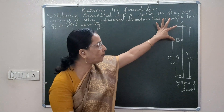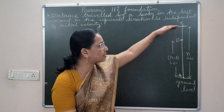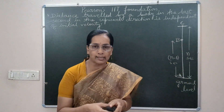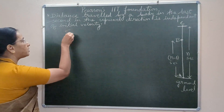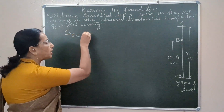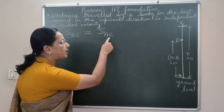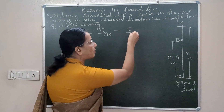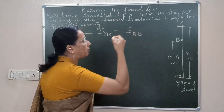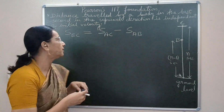The distance travelled in the last 1 second is the distance travelled by the body in n seconds minus the distance travelled by the body in n minus 1 seconds. So distance traveled in the last one second is B to C, that is A to C minus A to B. We will use the formula of distance traveled by the body in the nth second.